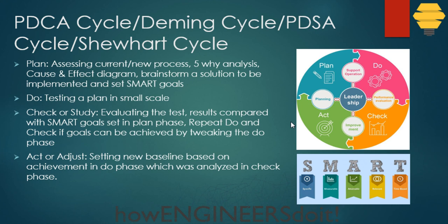In this video we'll try and understand what is the PDCA cycle. As the name suggests, it has four phases. Let's begin with the Plan phase. In the Plan phase, we go to a process and try to understand what the process is lacking or where we can improve — this is all about continuous improvement.